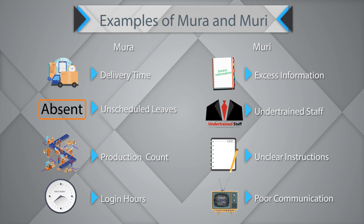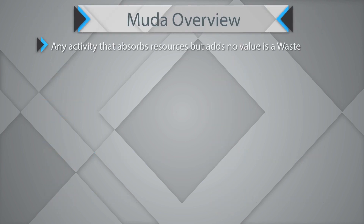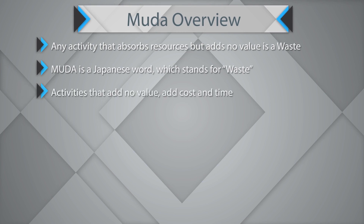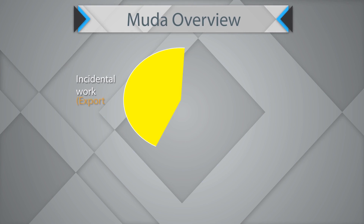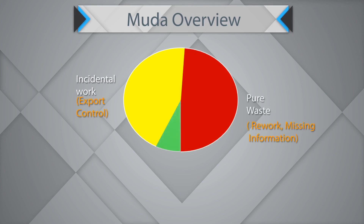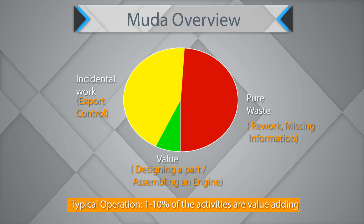Muda is a very important topic in the Lean study. Any activity that absorbs resources but adds no value is a waste. Muda is a Japanese word which stands for waste. Activities that add no value shall add cost and time. Waste is a symptom — you need to find root causes and eliminate them. Waste points towards problems within a system. There could be incidental work, pure waste, or value. In typical operations, Lean practitioners are of the opinion that between 1 to 10% of all activities shall be value-adding; all the rest shall be non-value-adds or pure waste.